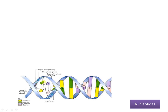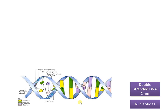The DNA double helix is formed by hydrogen bonds between the nitrogenous bases of the two strands. Adenine will pair with thymine, and cytosine will pair with guanine. This is how a DNA double helix is formed, and it is approximately two nanometers in size.